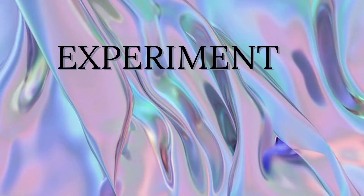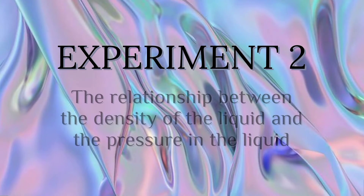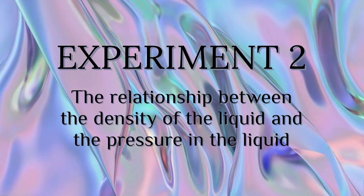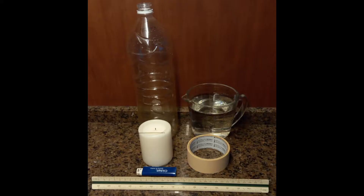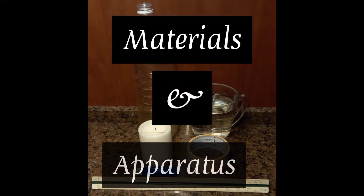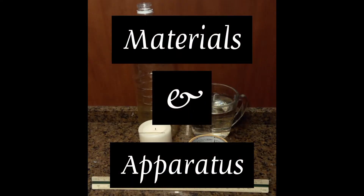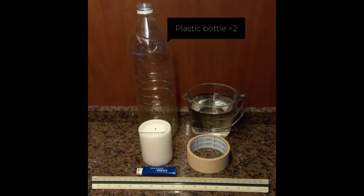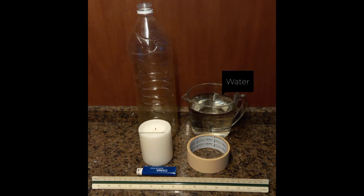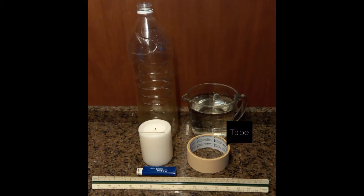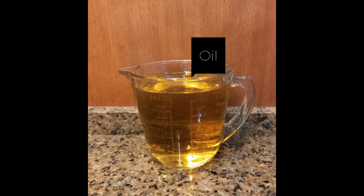The second experiment is about the relationship between the density of the liquid and the pressure in the liquid. For this experiment, we'll need two plastic bottles, water, candle, a needle, tape, lighter, a ruler, and oil.